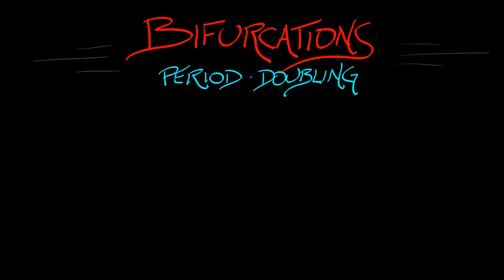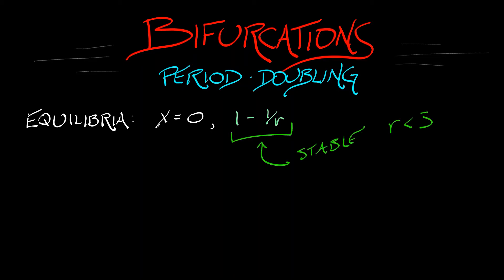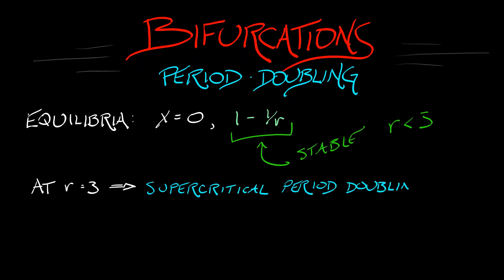If you go back and look at the analysis we did on this system initially, you can find easily that there are equilibria at x equals 0 and at x equals 1 minus 1 over r. Now, this latter equilibrium, 1 minus 1/r, is going to be stable for all values of r between 1 and 3. But at r equals 3, we have a bifurcation at that equilibrium — a supercritical period-doubling bifurcation. That means that for r past 3, that stable equilibrium becomes unstable, and right past this bifurcation we have a stable period-2 orbit.